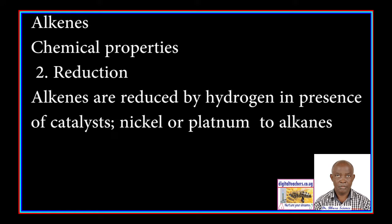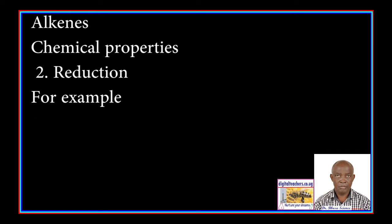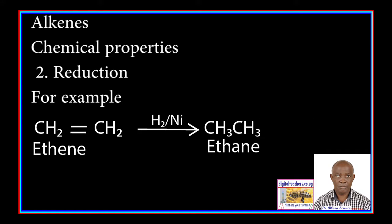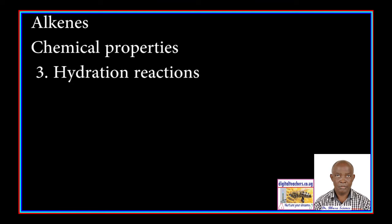2. Reduction: alkenes are reduced by hydrogen in the presence of a catalyst, nickel or platinum, to form alkanes. For example, ethene plus hydrogen in the presence of nickel gives ethane.